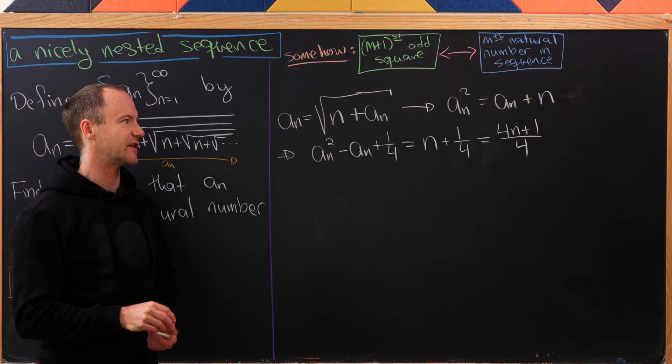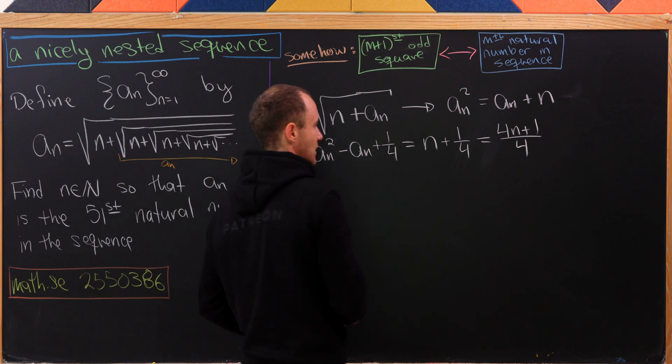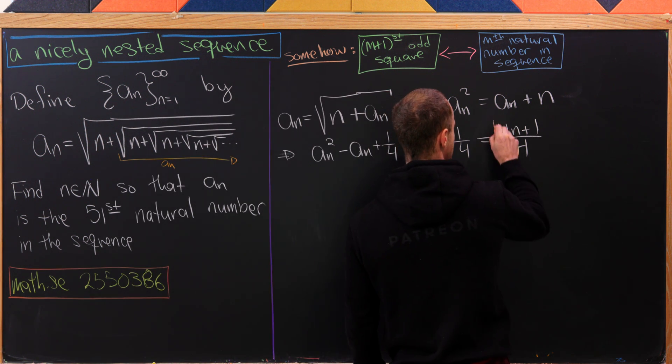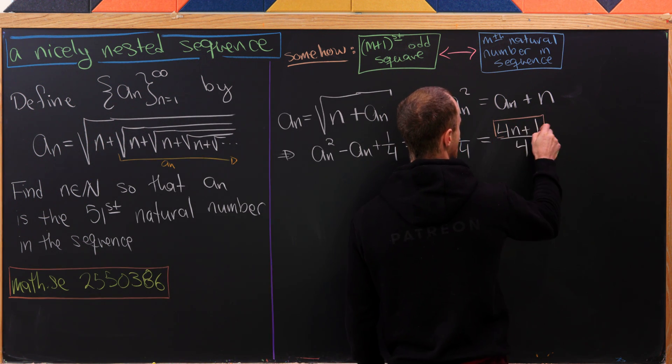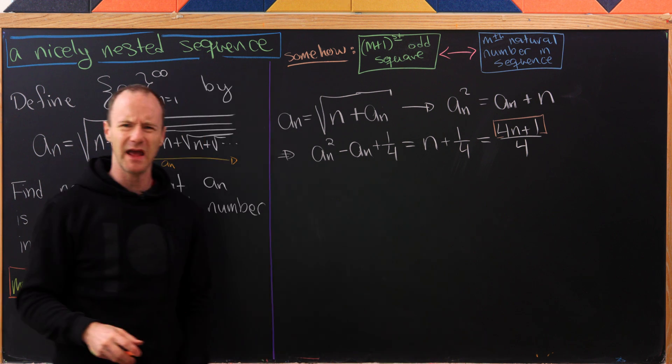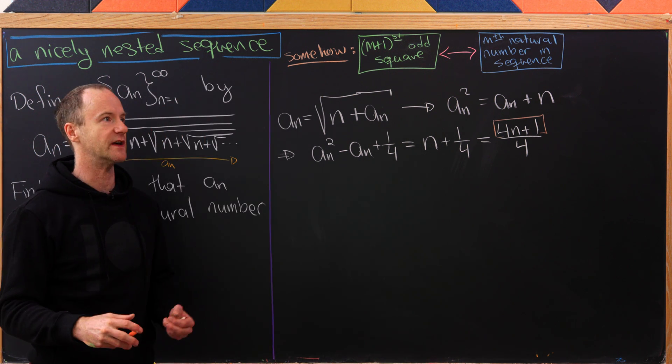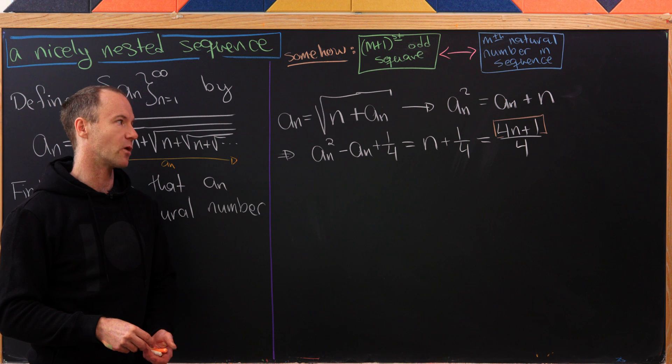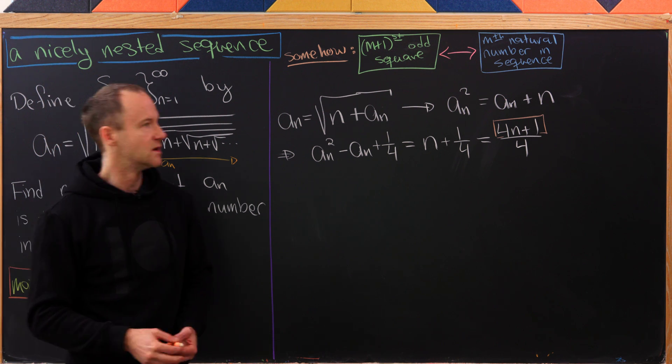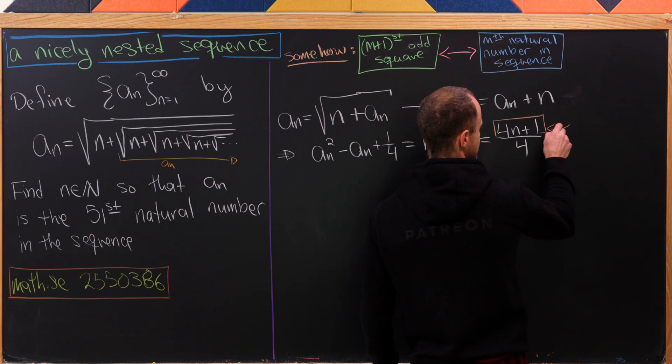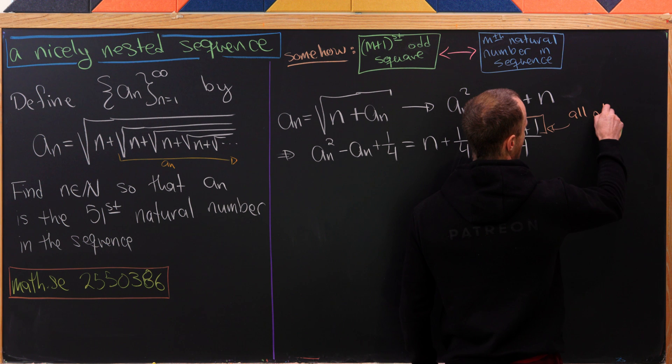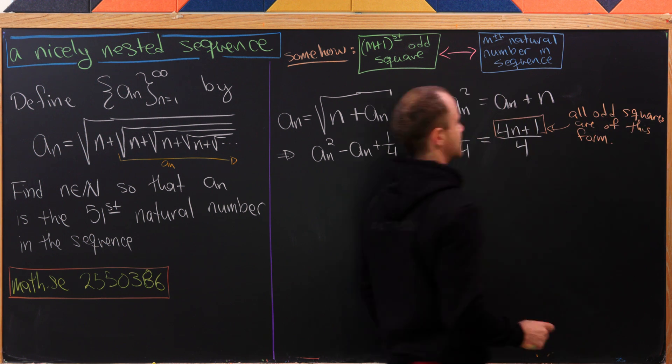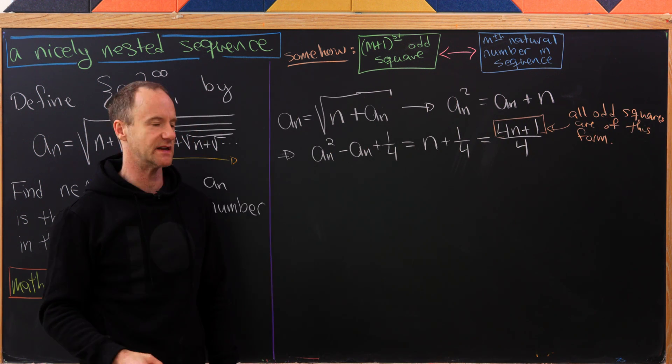Now I think we can see how the odd perfect square is arising. It's because we've got this 4n + 1 type term. It turns out that all odd perfect squares are of the form 4n + 1. So all odd squares are of this form. That means we won't miss any.